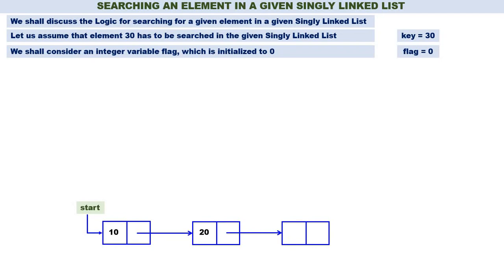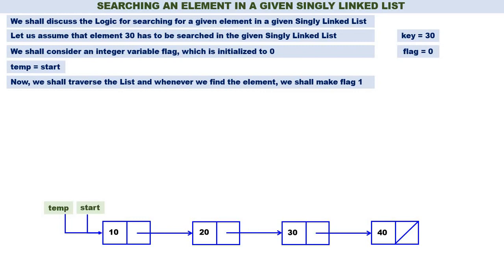Initially flag is equal to 0. This is our linked list — four elements: 10, 20, 30, 40, and start is containing the address of the linked list. Temp is equal to start. We should not traverse the linked list using the start pointer, so we use a temporary pointer — therefore temp is equal to start. Now we shall traverse the list and whenever we find the element we shall make flag equal to 1. Whenever we find 30 we make flag equal to 1.